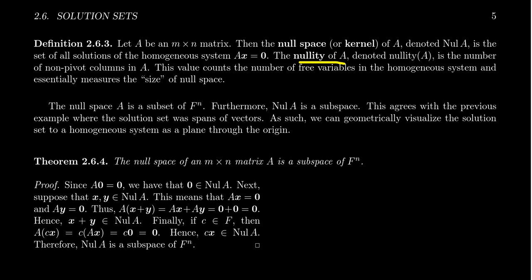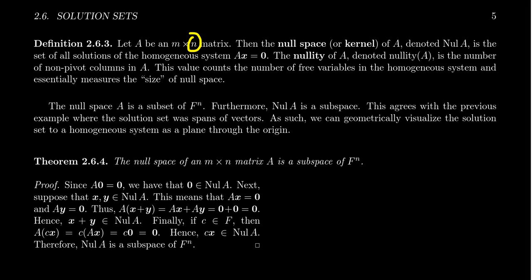We define the nullity of the matrix A, which we'll call nullity of A. It's going to be the number of non-pivot columns in A. This is significant because the non-pivot columns will correspond to free variables. We've seen before that a homogeneous system has non-trivial solutions for the free variables it has. So if we count the free variables in a system, that essentially tells us how big the null space — the solution set of the homogeneous system — is going to be. The null space is a subset of F^N, where N is the number of columns in the matrix A.